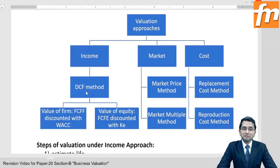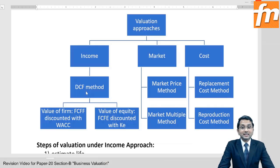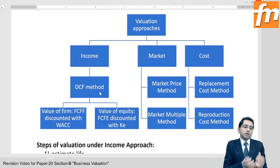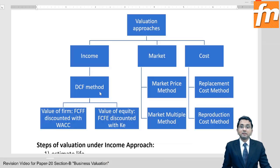DCF is not really new for you — you already know what DCF is right from CMA Intermediate. Try to recall the capital budgeting chapter where you calculated net present value. You estimate all future cash flows, calculate their present value, and make the sum total — that is the discounted cash flow method. Under DCF, either you can make valuation of the whole firm or you can make valuation of only equity shares.